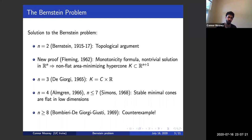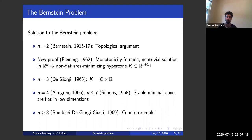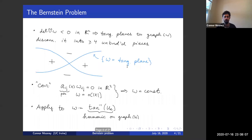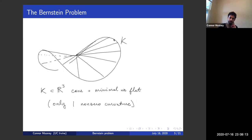Using this monotonicity formula, Fleming argued that if you have a global minimal graph and you zoom out repeatedly, then some subsequence of these zoom-outs converges to a non-flat area minimizing hypercone in R^{n+1}. So he reduced the problem to deciding whether or not there exist area minimizing cones in R^{n+1}. For example, working in R3 — solutions over R2 — there would have to be a minimal cone in R3, but intuitively these should not be possible because in R3 there are just two curvatures, one of which is zero automatically due to the cone structure, forcing the other to be zero as well, so the cone would have to be flat.